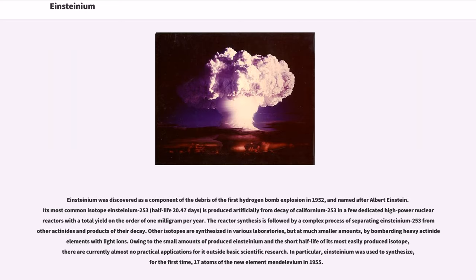The reactor synthesis is followed by a complex process of separating Einsteinium-253 from other actinides and products of their decay. Other isotopes are synthesized in various laboratories, but at much smaller amounts, by bombarding heavy actinide elements with light ions. Owing to the small amounts of produced Einsteinium and the short half-life of its most easily produced isotope, there are currently almost no practical applications for it outside basic scientific research.